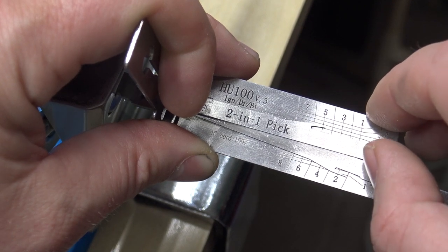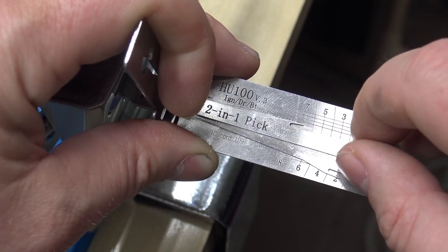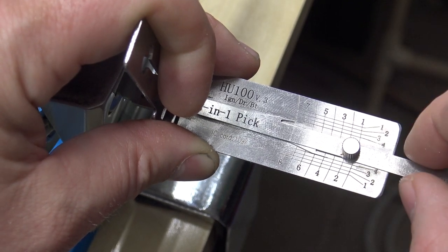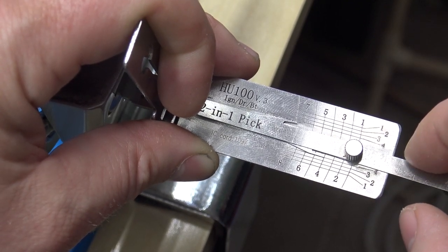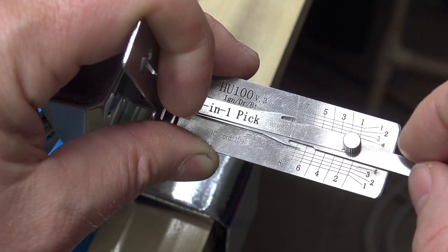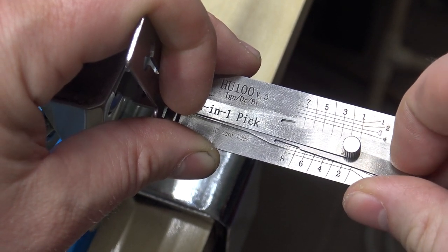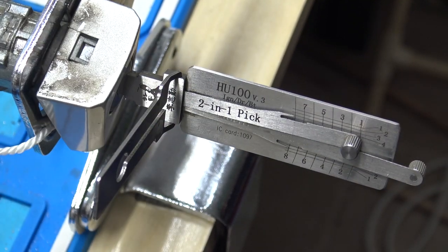I'll show you on 5 again here. There's not a lot of movement, but there is a tiny bit of spring, so you just skip it. Same thing with 7, and it should just be 1 holding us up here. And it's number 8, and we're open again.